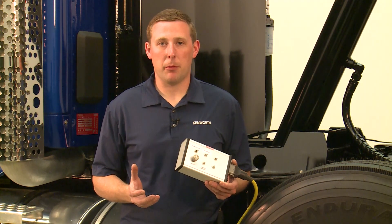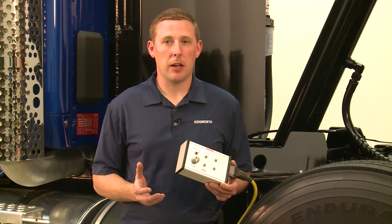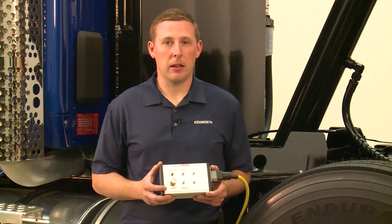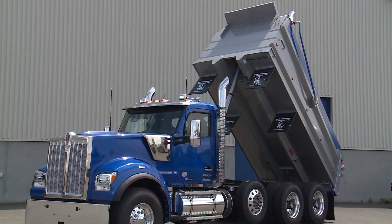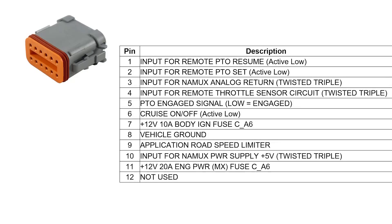Another feature available on the 12-pin connector is the application road speed limiter. This feature can be set to limit the road speed of the truck when a signal is sent from a switch, which in many cases is installed on a body. For this example, there is a switch connected to the dump box which is active when the box is up. When active, it limits the truck to 10 miles per hour until the box is lowered. The application road speed limiter is controlled by connecting the circuit between pin 9 and 8. It can be programmed so the limiter is active when the circuit is closed or when the circuit is open. If you want the limiter to be active if the switch were to fail, it should be programmed to activate when the circuit is open.